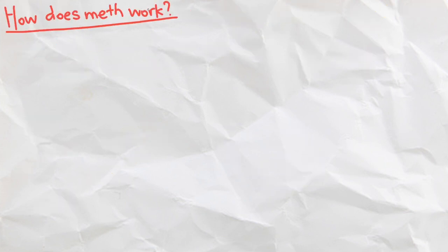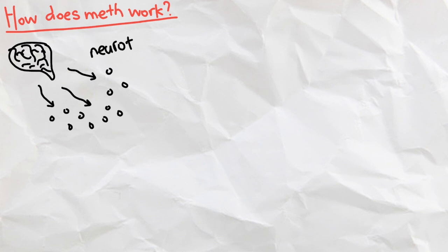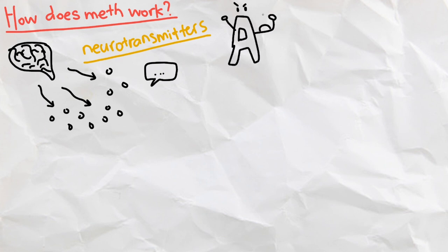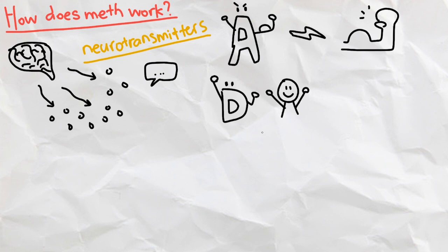So now, how does meth actually work? Our brain uses neurotransmitters as a way to convey messages to our nervous system. For example, acetylcholine is a neurotransmitter that stimulates muscle movement, while dopamine is another neurotransmitter that makes you feel pleasure.